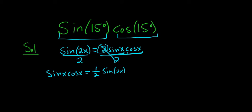All we have to do now is replace all of the x's with 15 degrees. So sine of 15 degrees times cosine of 15 degrees is equal to 1 half sine of 2 times 15 degrees.